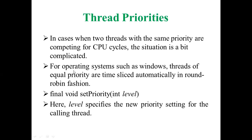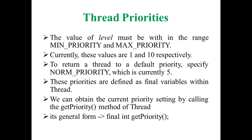To set priority, we have the method called setPriority(). With this method, I can give the level of the thread — whether max priority, min priority, or normal priority. The value of level must be within the range of min priority and max priority, which can vary from 1 to 10. Max priority is 10, min priority is 1. To return a thread to default priority, specify norm priority, which is currently 5. While executing applications, I may want to raise a particular thread to maximum priority and once the task is completed, settle it back to normal priority using setPriority().